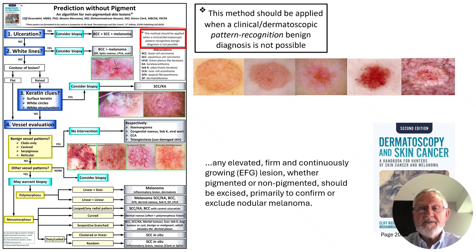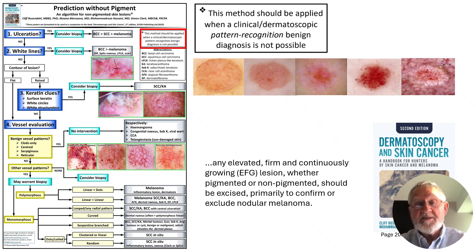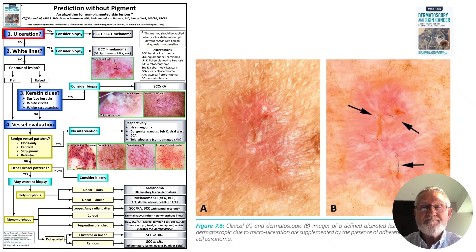There is another thing which takes priority over any algorithm: any elevated, firm and continuously growing — that's EFG — lesion, whether pigmented or non-pigmented, should be excised primarily to confirm or exclude nodular melanoma.